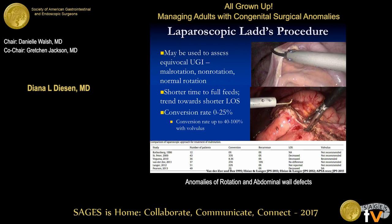You can perform a Ladd's procedure laparoscopically — it's been described in the literature for about 15 years. The conversion rate is somewhat high, up to 25% in studies, because broadening the mesentery can be very difficult and disorienting laparoscopically. For patients who have a volvulus, the conversion rate is 40 to 100%. Most pediatric authors recommend not attempting laparoscopy if you suspect or identify a volvulus. Laparoscopy can be very helpful when the upper GI is equivocal. If done laparoscopically, patients tend to have a shorter time to full feeds and a trend toward shorter length of stay, though we don't have long-term data on whether re-volvulus risk is higher.